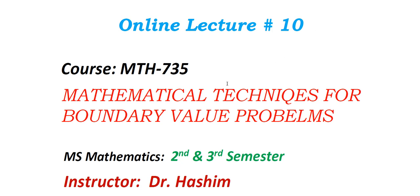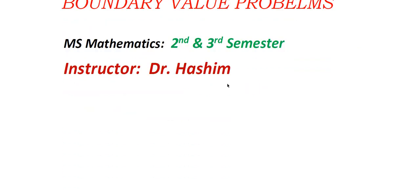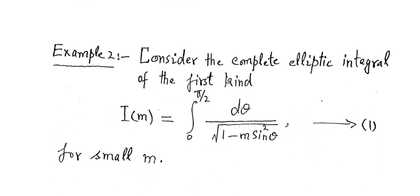This lecture is related to the asymptotic approximation of integrals. In our previous lectures we started the method of expansion of integrands for finding the asymptotic approximation of integrals. In today's lecture we will consider another example — example number two — which involves a complete elliptic integral of the first kind.